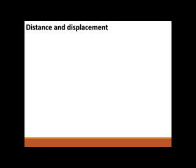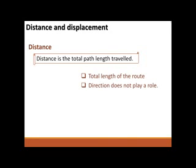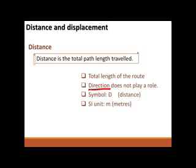The first quantity is distance. Distance is the total path length travelled. Distance is a scalar, so all we're concerned about is the length of the route — 20 kilometres, 15 miles — direction does not play a role. The symbol is d, or x or y depending on the plane we're working in, and the SI unit is metres.